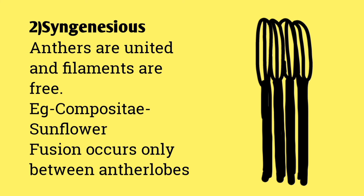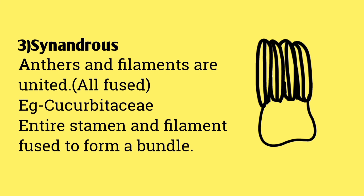In syngonesius, anthers are united and filaments are free. Example is the Compositae family, such as sunflower. Here fusion occurs only between anther lobes. In synandrous, both anthers and filaments are united. Example is the Cucurbitaceae family, where the entire stamen and filament fuse to form a bundle.